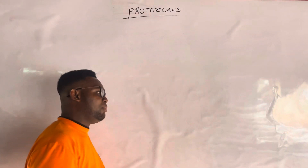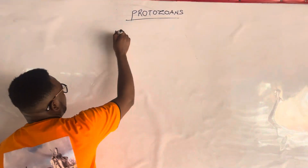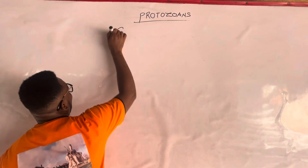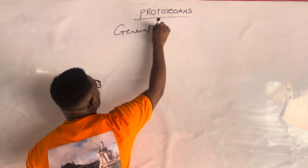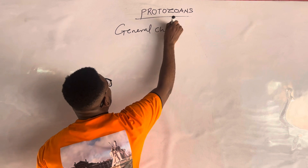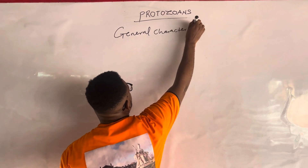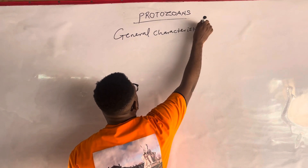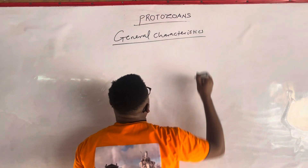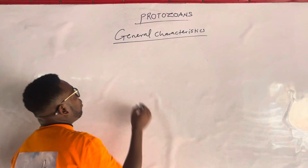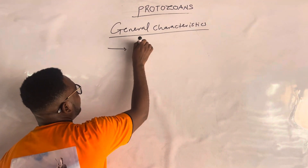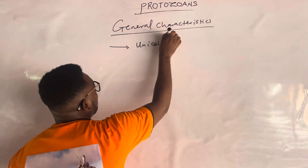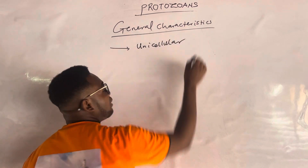We will still see that in our upcoming videos. For protozoans, the first thing, like I said, you look out for general characteristics. One: protozoans are unicellular organisms. They are unicellular.